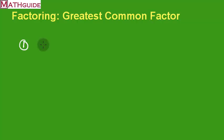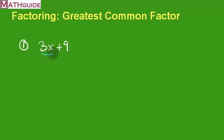Let's take care of our first problem. Let's say we have a problem that looks like this: 3x plus 9. If we said we're going to factor it, we would notice that these two terms have something in common. It turns out that we can factor out a 3.